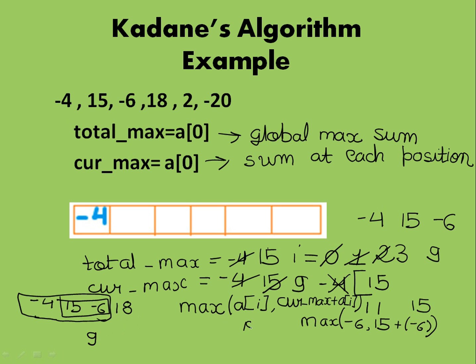So in current_max I will store 27. As well as in total_max, I will change it to 27.